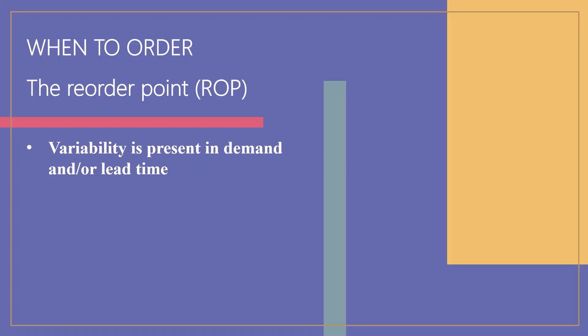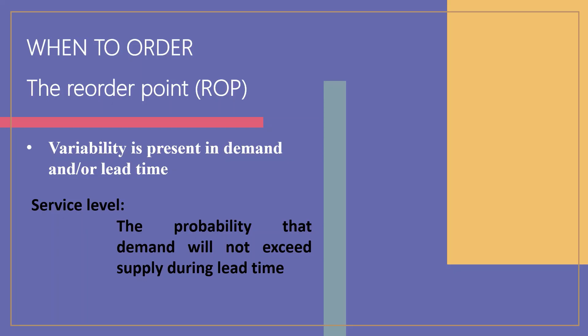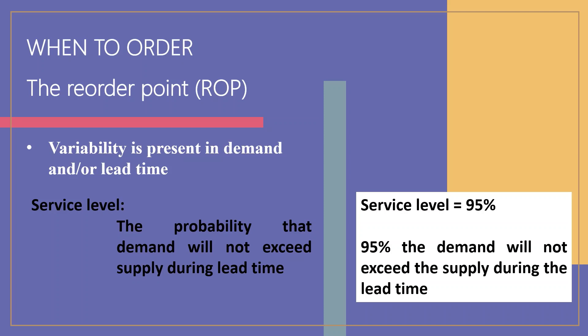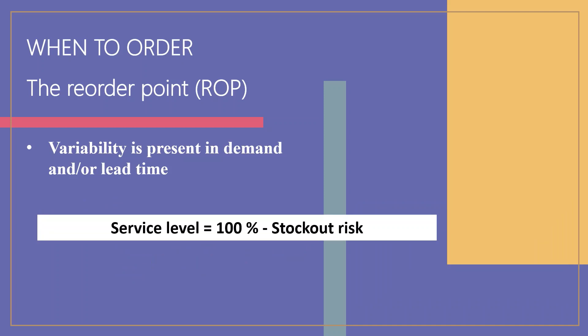Because it costs money to hold safety stock, a manager must carefully weigh the cost of carrying safety stock against the reduction in stockout risk it provides. The customer service level increases as the risk of stockout decreases. Order cycle service level can be defined as the probability that demand will not exceed supply during lead time, meaning the stock on hand will be sufficient to meet demand. A service level of 95% implies a 95% probability that demand will not exceed supply during lead time. The risk of a stockout is the complement of service level: service level equals 100% minus stockout risk.